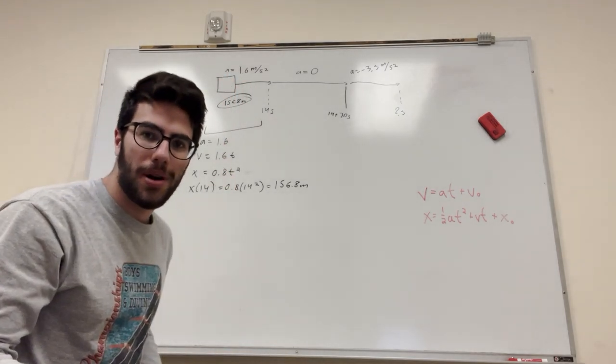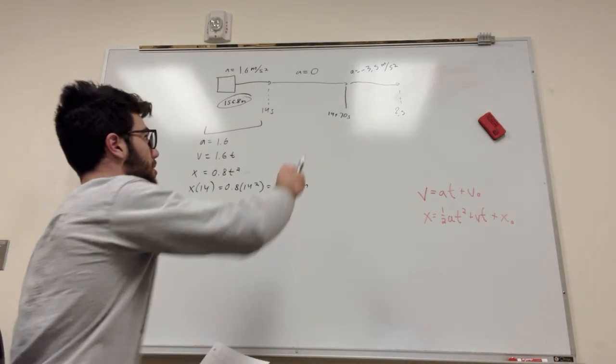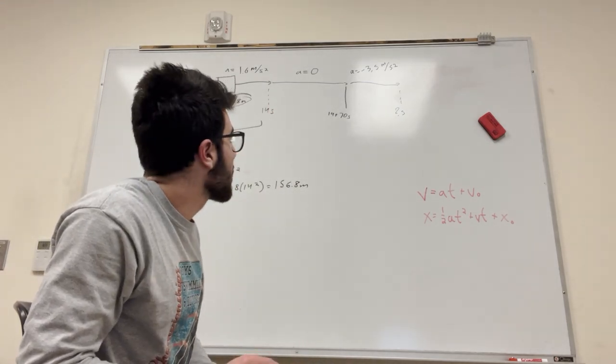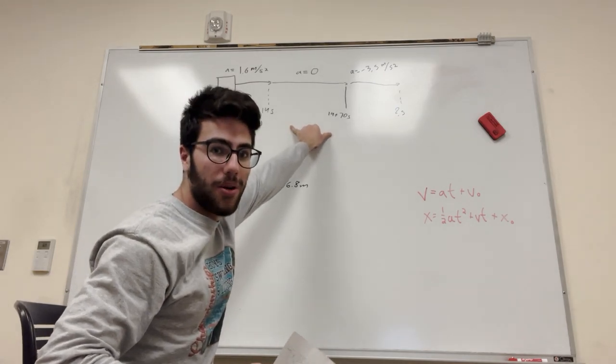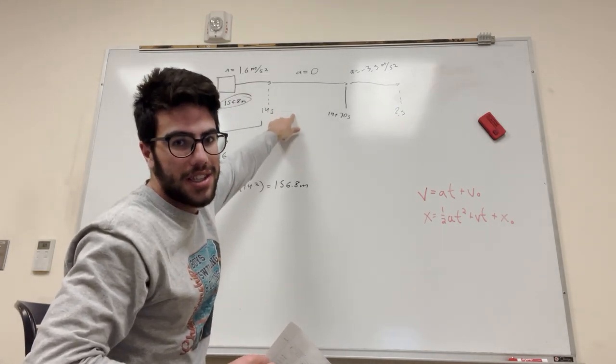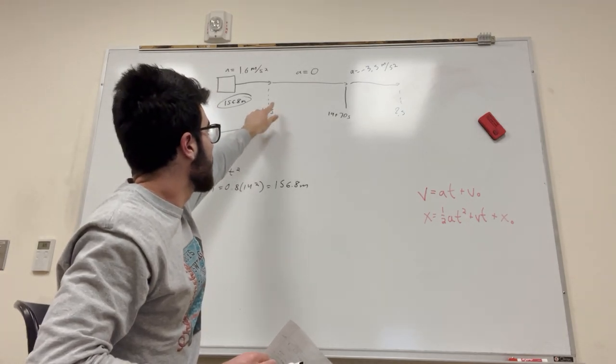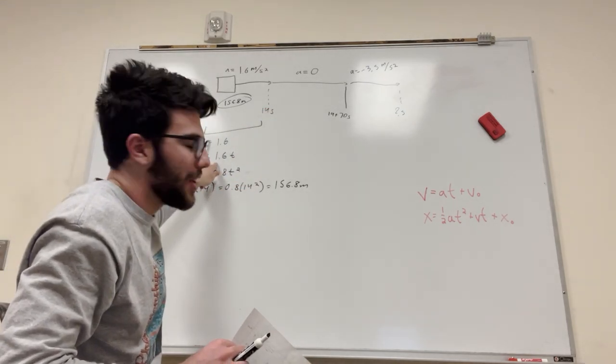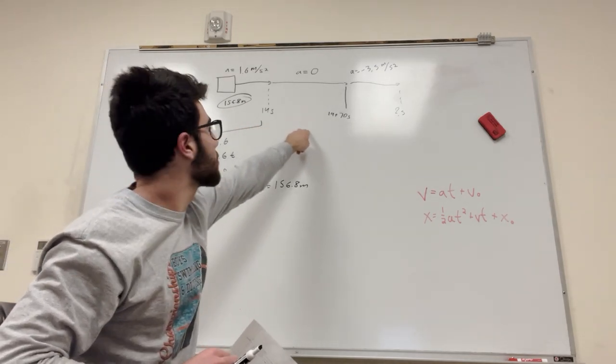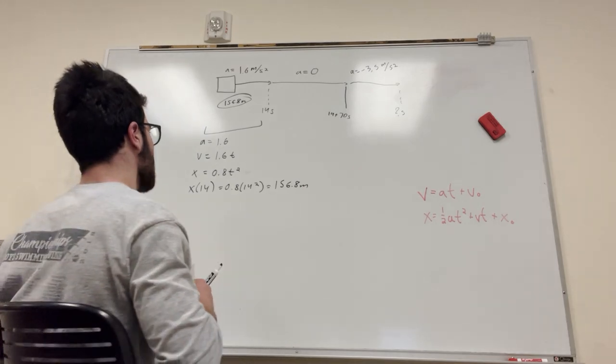156.8 meters. All right, so anyway, we have a third of the problem solved. So now we need to do this part. Our acceleration is equal to zero. So that means that we need to know what our velocity is during this period in order to find our time. Thankfully, we know that we're not accelerating here, so our velocity is going to be constant. And we know that we have this velocity equation. We can find out what our velocity is at 14 seconds right here for our next part since it's going to stay the same. So let's do that.